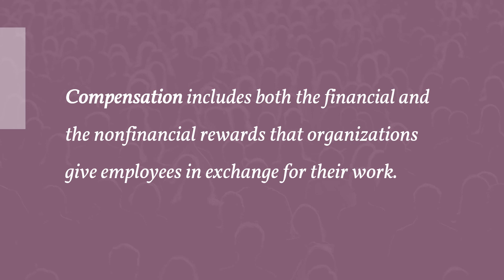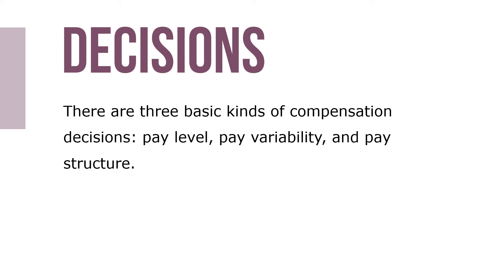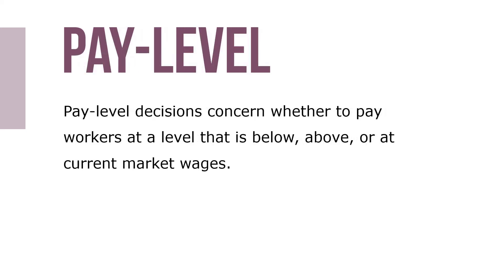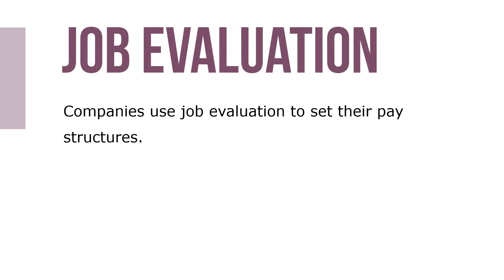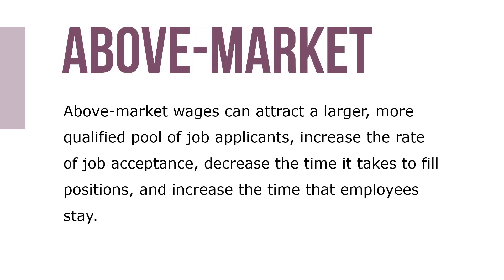Compensation includes both the financial and non-financial rewards that organizations give to employees in exchange for their work. There are three basic kinds of compensation decisions: pay level, pay variability, and pay structure. Pay level decisions concern whether to pay workers below, above, or at current market wages. Companies use job evaluation to set their pay structures — determining the market value of the knowledge, skills, and requirements needed to perform each job. Most companies try to pay the going rate. Companies that pay above-average wages can attract a larger, more qualified pool of applicants, increase job acceptance rates, decrease time to fill positions, and increase employee retention.